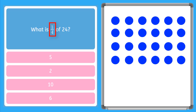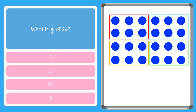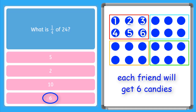So what is that asking me? Well, in real life, I could have 24 candies and four friends, and I want to give my four friends each the same number of candy. So how many pieces would each friend get? Let's break our candies up into four groups and see. Now I have four even groups. I can just count how many pieces are in one group: one, two, three, four, five, six. Each friend will get six candies.